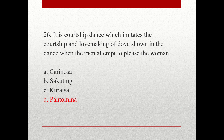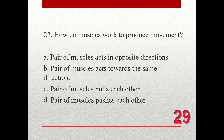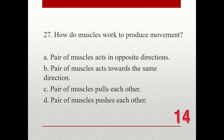Question number twenty-seven. How do muscles work to produce movement? The choices are A. A pair of muscles act in opposite directions, B. A pair of muscles act toward the same direction, C. A pair of muscles pull each other, D. A pair of muscles push each other.